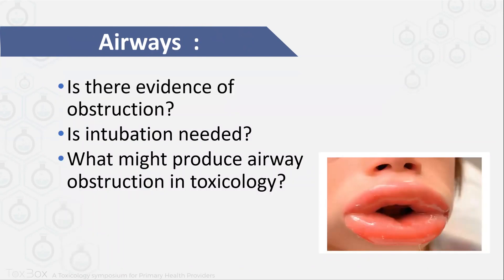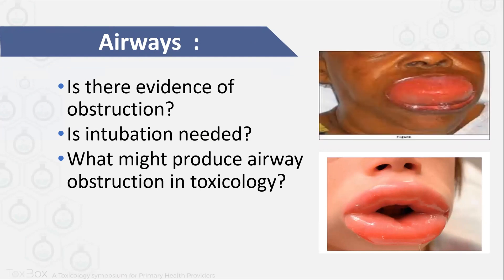Let's start with our ABCs. For airways, it is extremely important to look for any evidence of obstruction and determine if intubation is needed. What might produce airway obstruction in toxicology? A foreign body, anaphylactic shock, a hydrocarbon, or a corrosive injury obstructing the airway. Determine whether your patient can handle their airway — if yes, proceed to B; if no, intubate your patient.